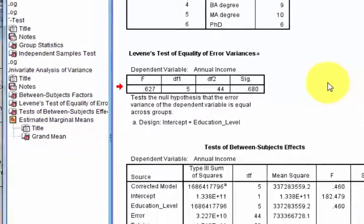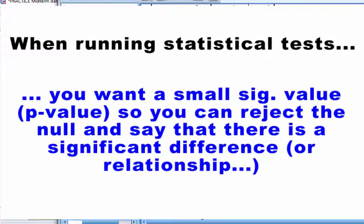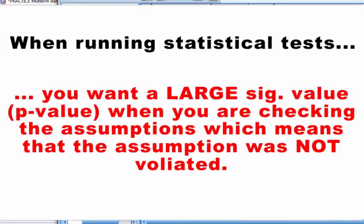Last little shortcut here is you want a small p-value for the actual t-test, the f-test, the correlations, whatever. You want a small p-value that tells you that the relationship or the difference is significant and you found something. But when you're checking the assumptions, you do not want a small p-value. Because if you have a small p-value there, that means you violated that assumption.